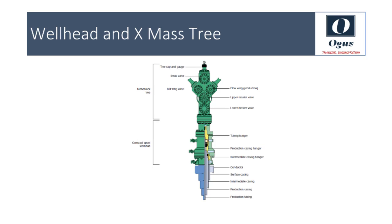The X-mas tree is the valve assembly for well control from the surface, usually flange-connected to the wellhead. It consists of gate valves — from lower to uppermost in sequence: the lower master valve, upper master valve, swab or crown valve, production wing valve, and kill wing valve. The upper master valve is usually remotely operated. The production flow line is attached to the production wing valve through a choke, which acts as a flow control valve and can be either adjustable or fixed. The integrity of the X-mas tree valves, casings, and wellhead seals must be checked regularly by pressure testing.